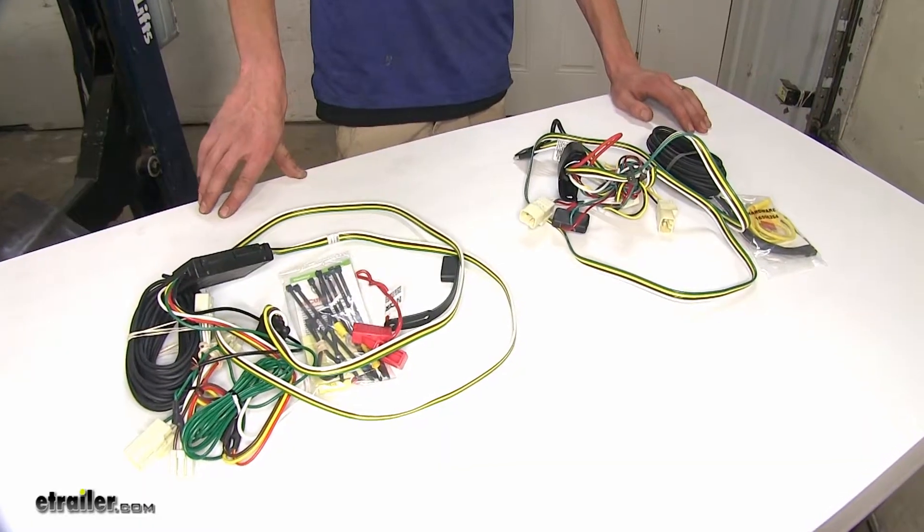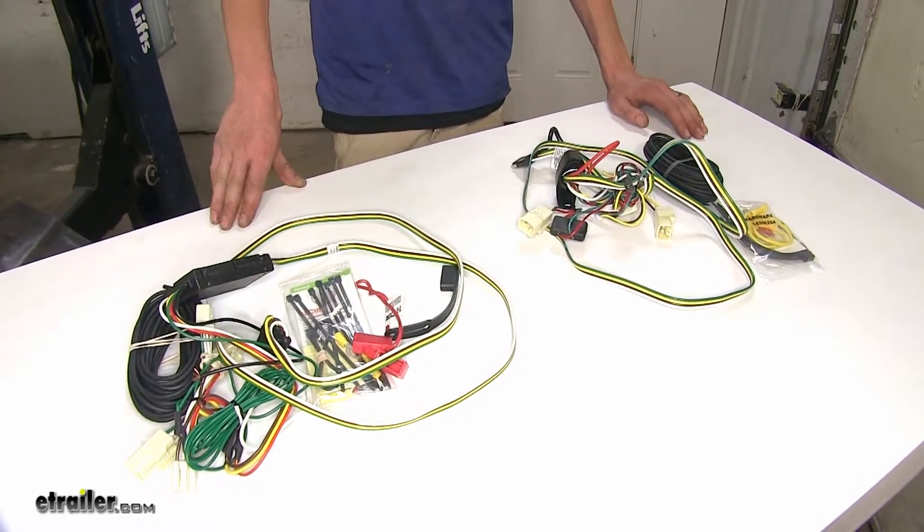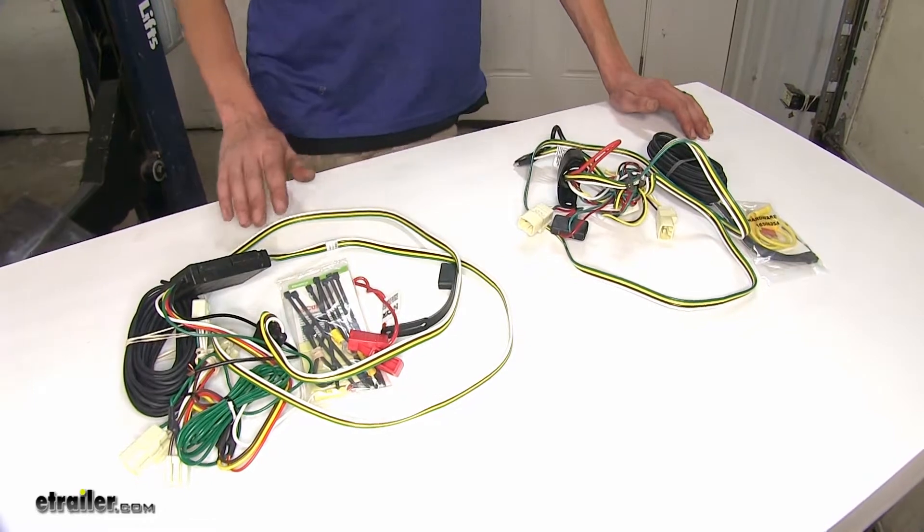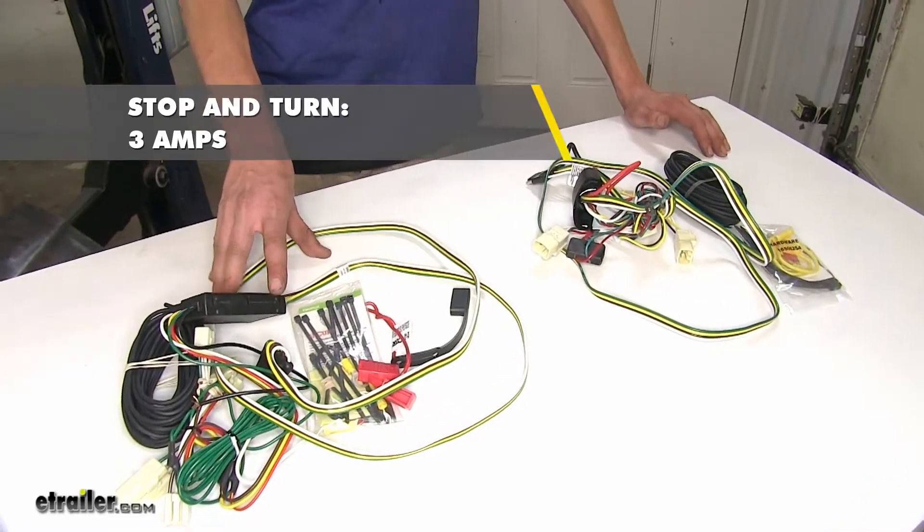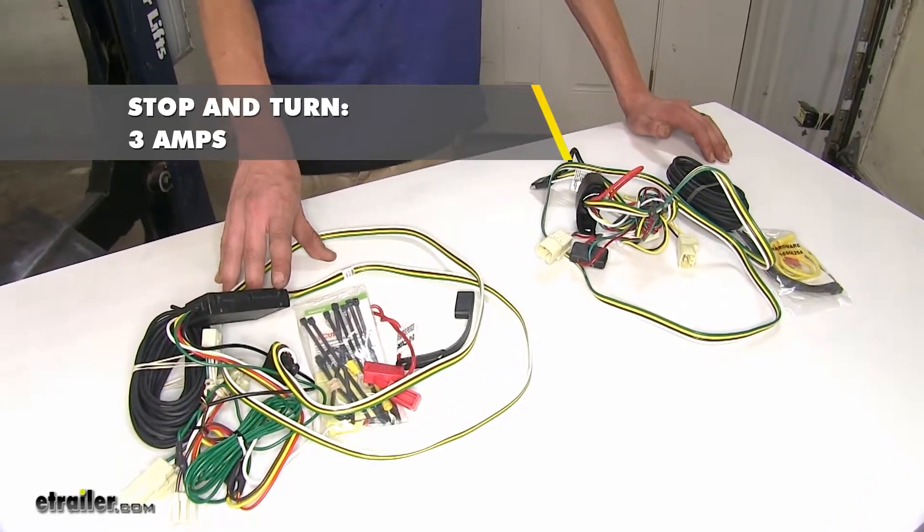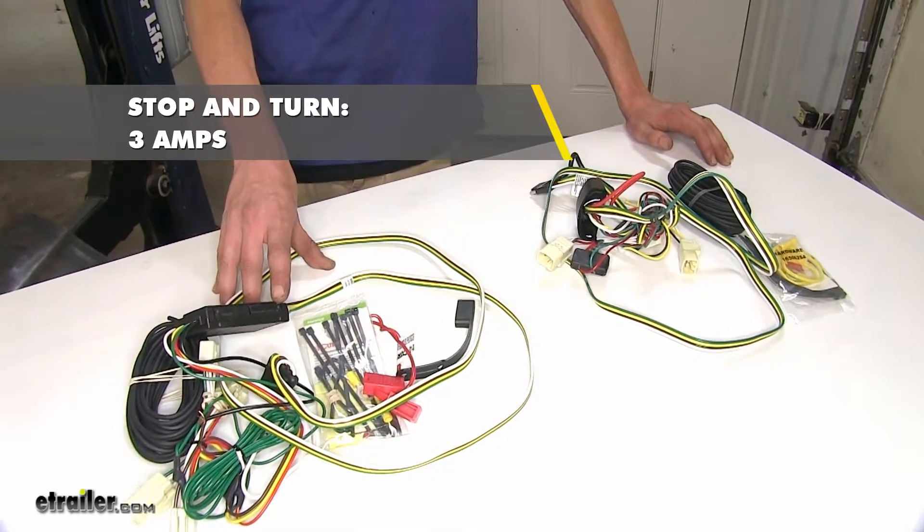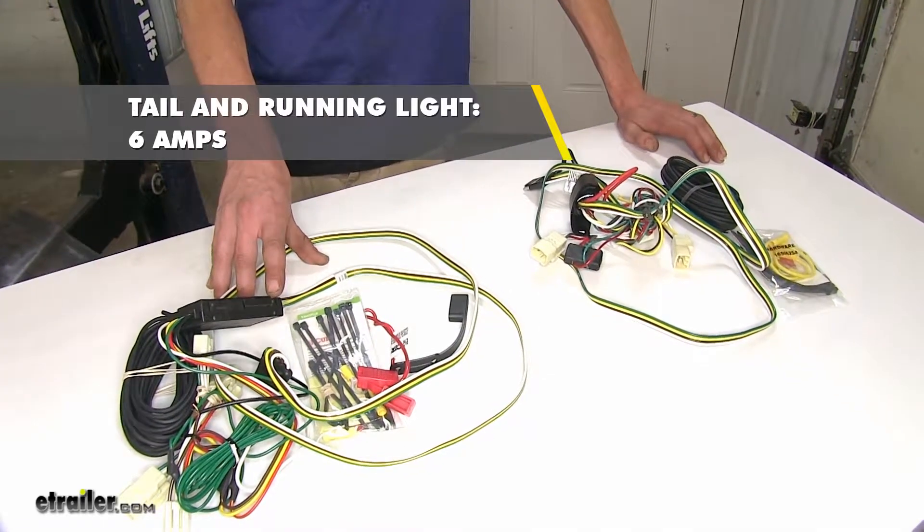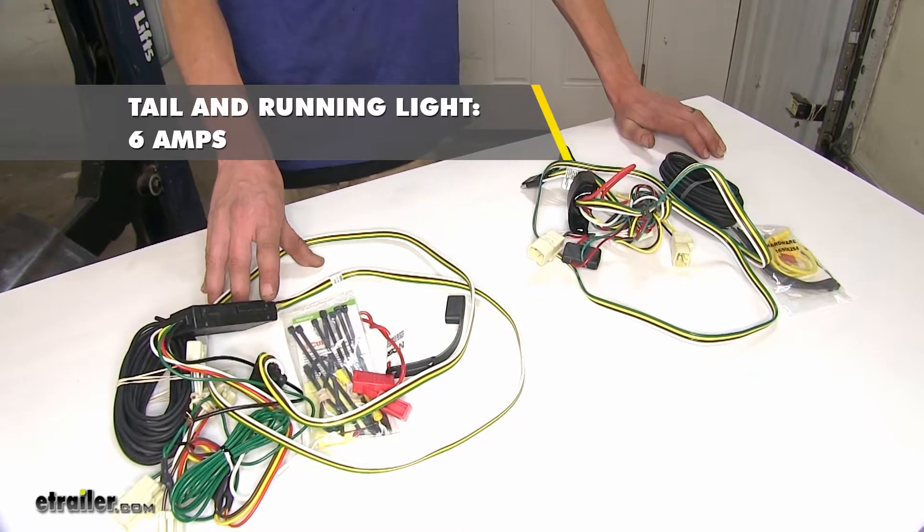Now, the biggest differences that we found between our wiring harnesses come down to the power output that they produce. Our Curt T-Connector wiring harness here puts out three amps of power for our stop and turn signal circuits, with six amps total power for your tail light and running light circuits.